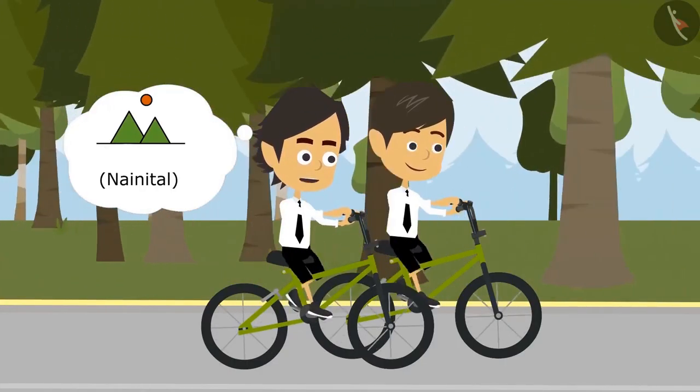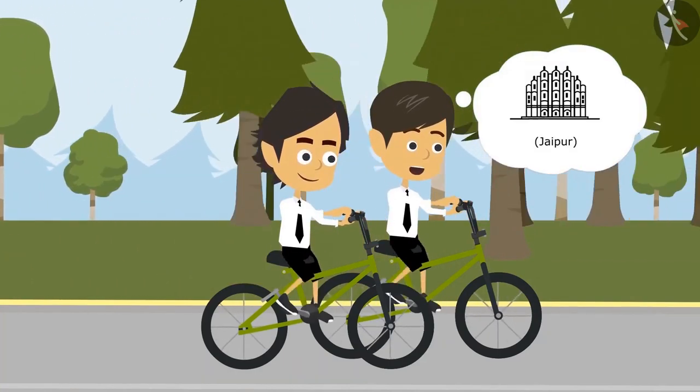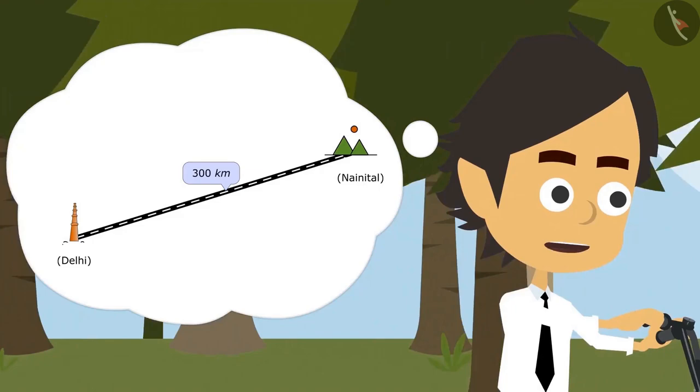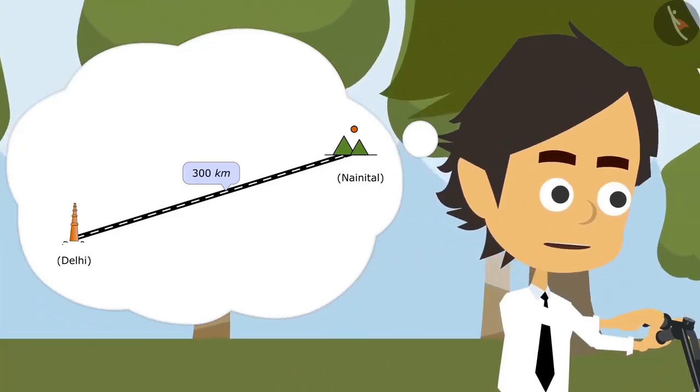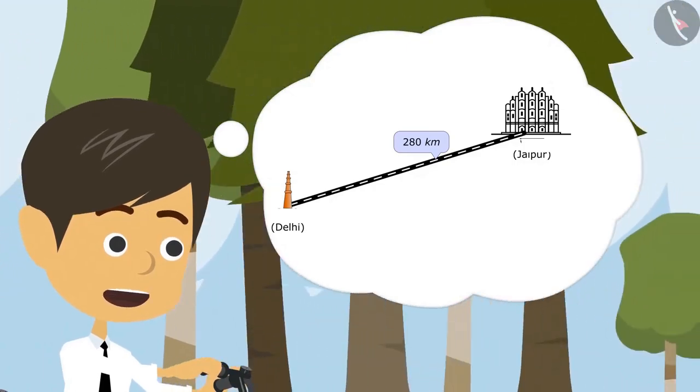I am going on a trip to Nainital. Really? And we are going to Jaipur. Nainital is 300 kilometers away from here. Is that so? And Jaipur is 280 kilometers away.